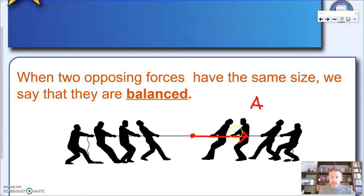Remember, the tip shows the direction, the tail where the force is acting, and the length tells you the size. And this is the pulling force from team A.